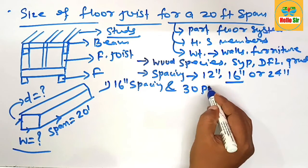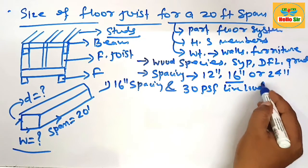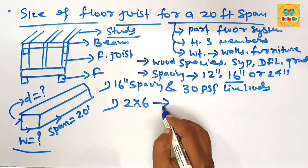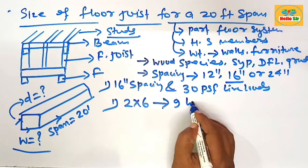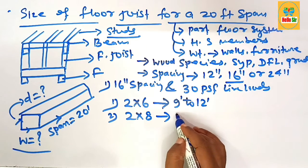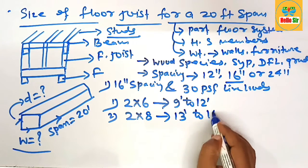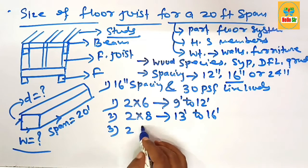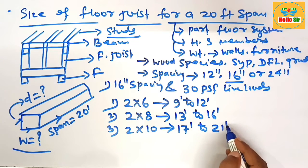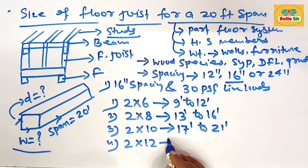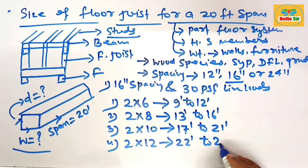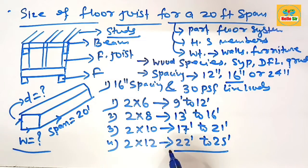At a 30 PSF live load and 16-inch spacing: a 2×6 dimensional lumber as a floor joist can span about 9 to 12 feet; a 2×8 dimensional lumber can span about 13 to 16 feet; a 2×10 dimensional lumber can span 17 to 21 feet; and a 2×12 dimensional lumber can span 22 to 25 feet maximum.